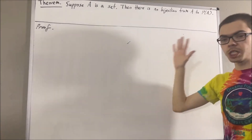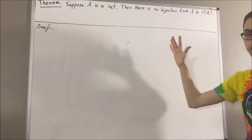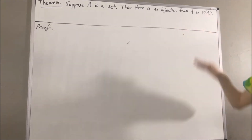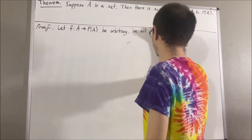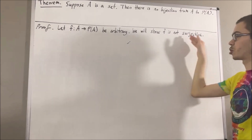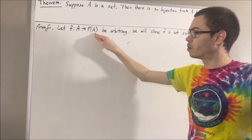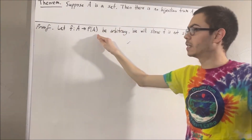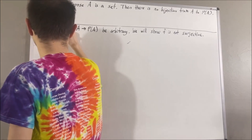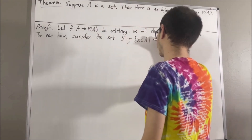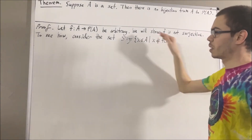To show that, we're going to show that given an arbitrary function from A to the power set of A, that function is not surjective. So let's consider an arbitrary function F from A to the power set of A. From here, we're going to show that F is not surjective. We consider the set of elements x in A such that x is not an element of F(x), and we're going to call this set S.